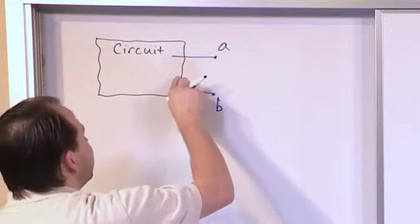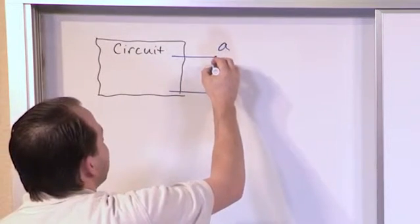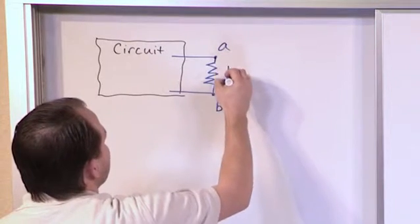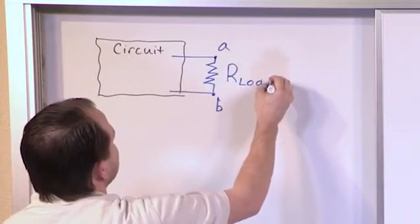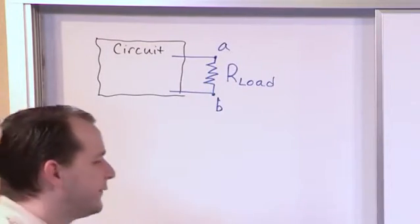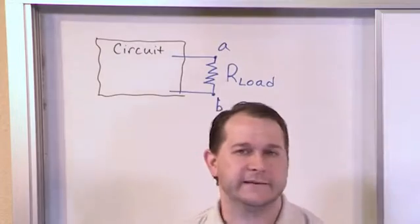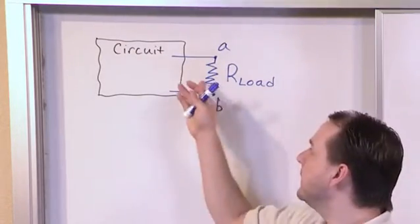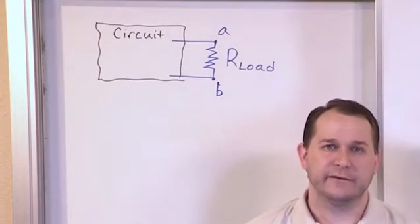Now ultimately, pretty much every load that we're going to care about can be modeled as a resistor. So we're going to call it R_load. So for instance, if you have a light bulb connected between terminals A and B, like if you're building a flashlight circuit or something like this, then that light bulb has a resistance. So we model it as a resistor even though it's a light bulb, because it has resistance.